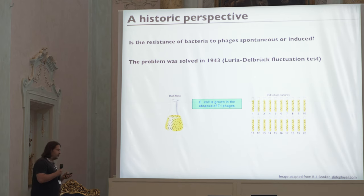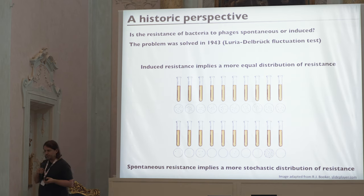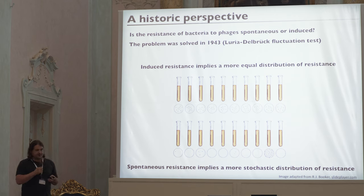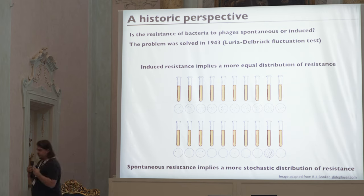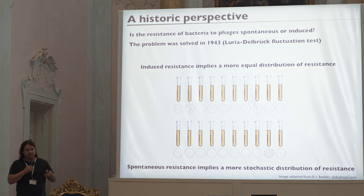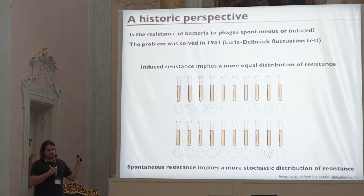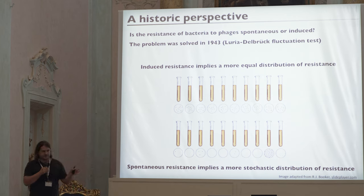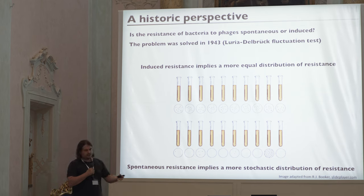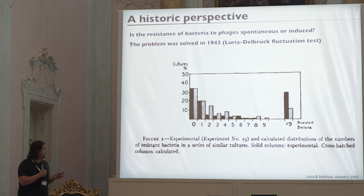The answer was found in 1943 — the famous Luria-Delbrück fluctuation test. They grew many bacteria, separated them into different populations, grew them again, then exposed them to the phage. Under the pre-existing hypothesis, many petri dishes would show no resistance because you sample a small population, but those that are resistant would be very resistant. Under the plastic hypothesis, resistance would be more equally distributed.